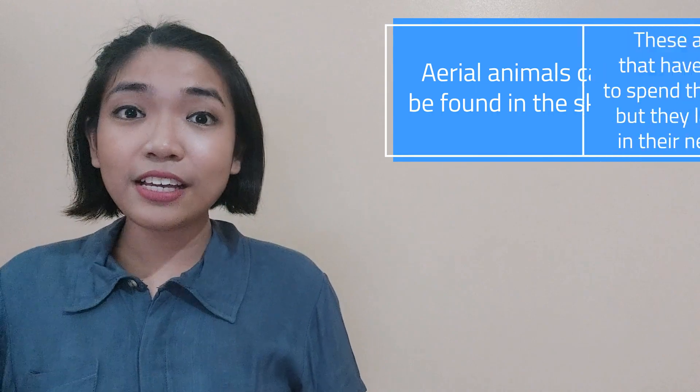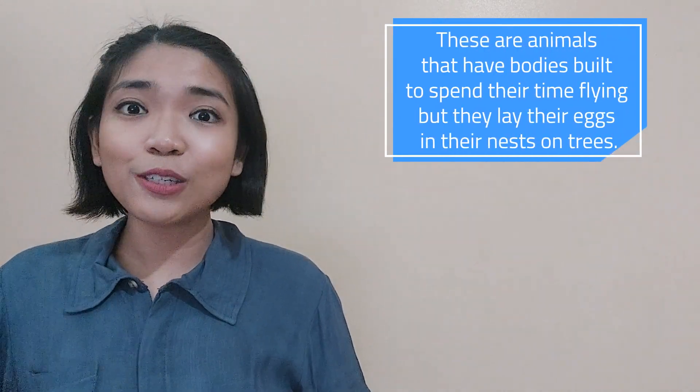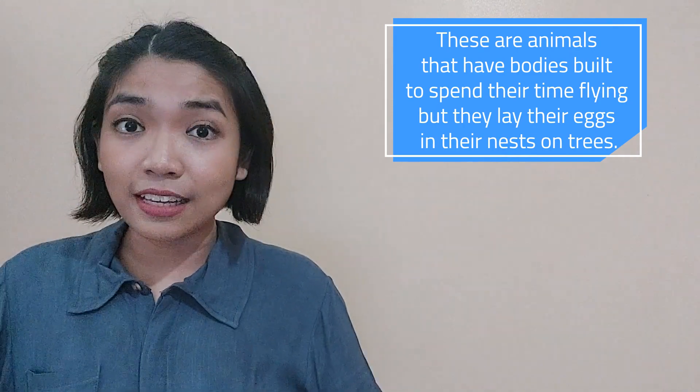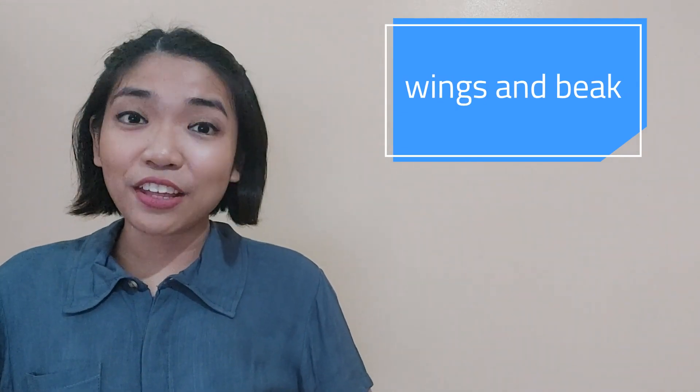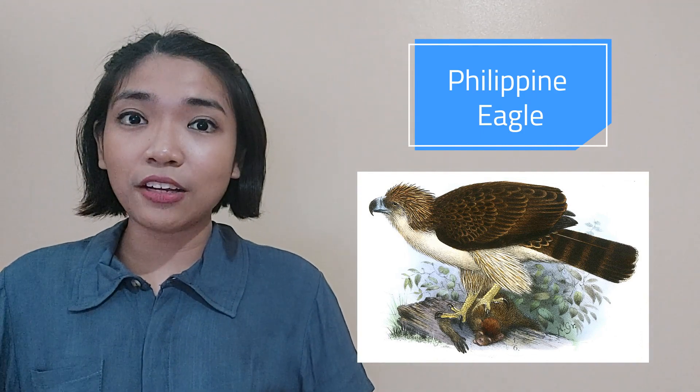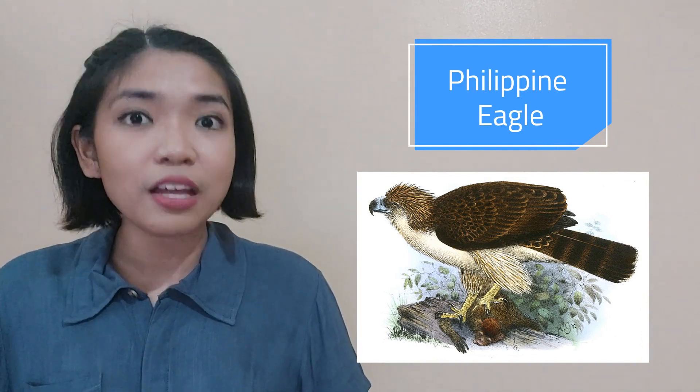Aerial animals can be found in the skies. These are animals that have bodies built to spend their time flying, but they lay their eggs in their nests on trees. Their main features are wings and a beak. Their wings are used to fly, and their beak is used to hunt for food and to protect themselves from predators. Of course, we have our very own Philippine Eagle, which is the second largest aerial animal in the world.